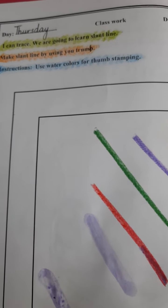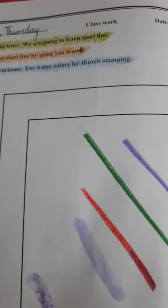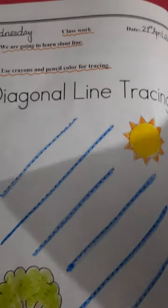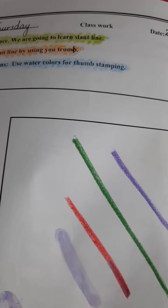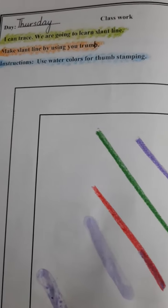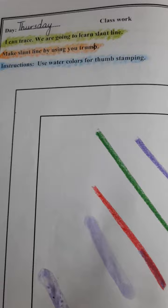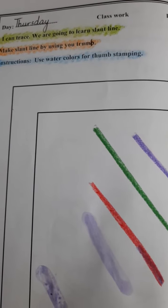Okay playgroup class. Aapne previous working mein slant line ki practice ki thi? Theek hai? Aapne aaj kya karni hai? Slant line ki fun activity karni hai. It's a surprise and fun activity for you. Are you happy? Okay, let's start our work.